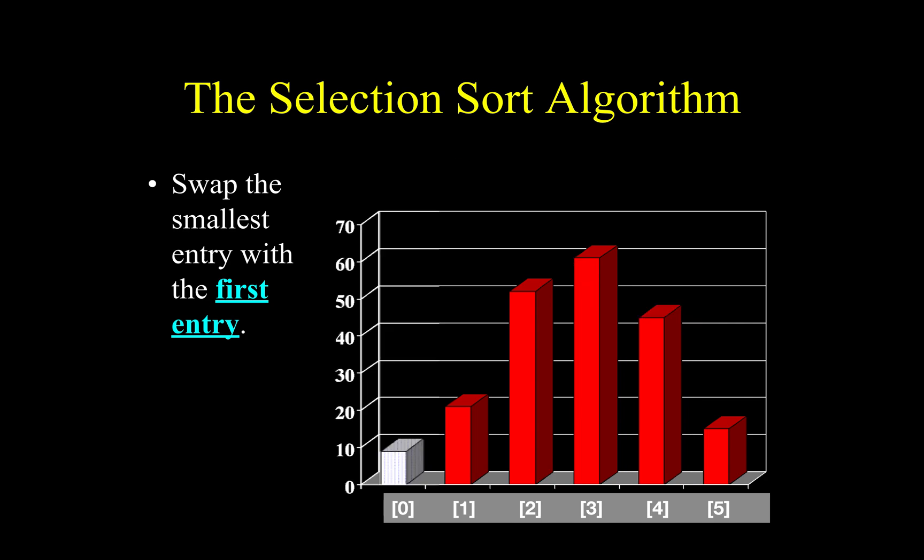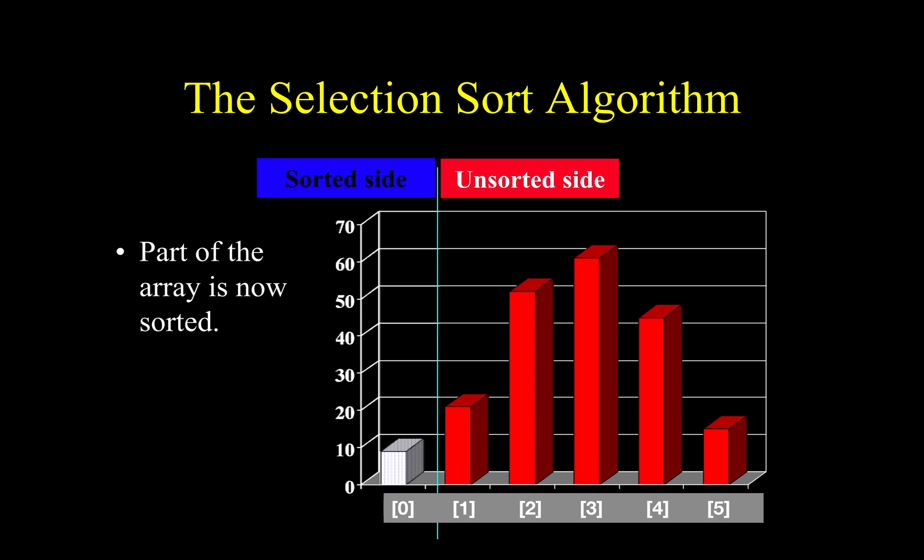Now you can see we have set the smallest with the first. You can see the left side of the array, which is in blue color and ash color, is sorted. It's called the sorted side, and the rest of the array is the unsorted side. Part of the array is sorted.